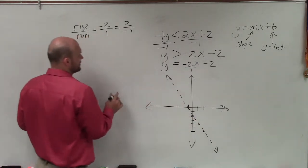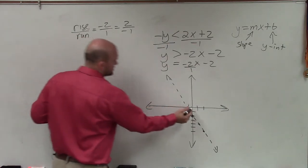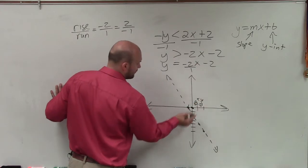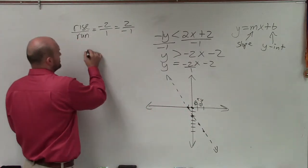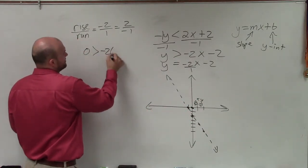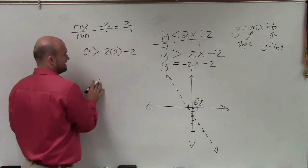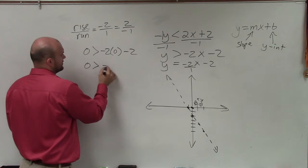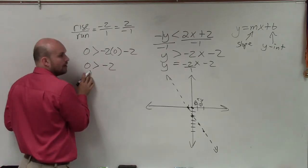So since it does not go through the origin, to test 0, 0, all I'm simply going to do is plug in 0 for x and 0 for y, because that's the coordinate 0, 0. So 0 is greater than negative 2 times 0 minus 2. Negative 2 times 0 is 0, so I have 0 is greater than negative 2. Is that true or false? It's true.